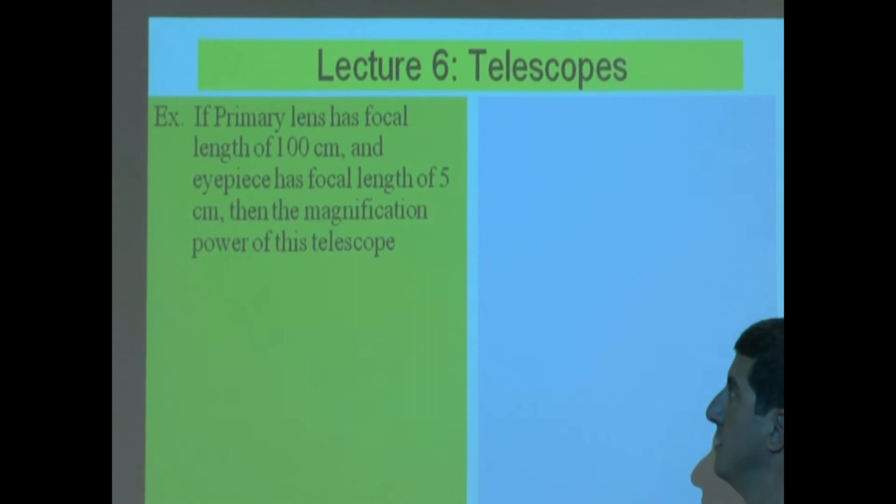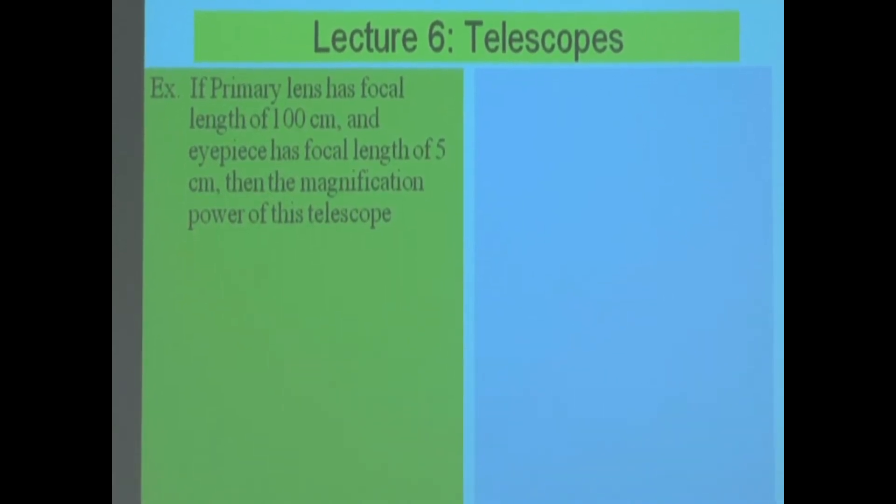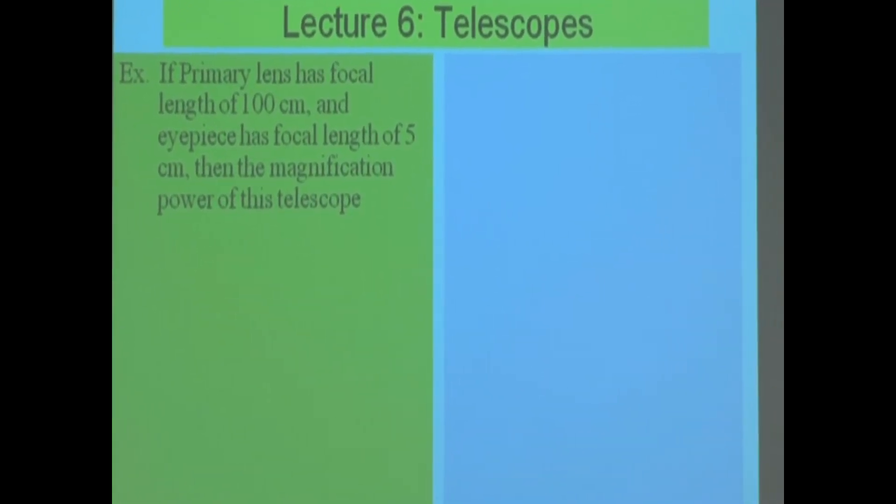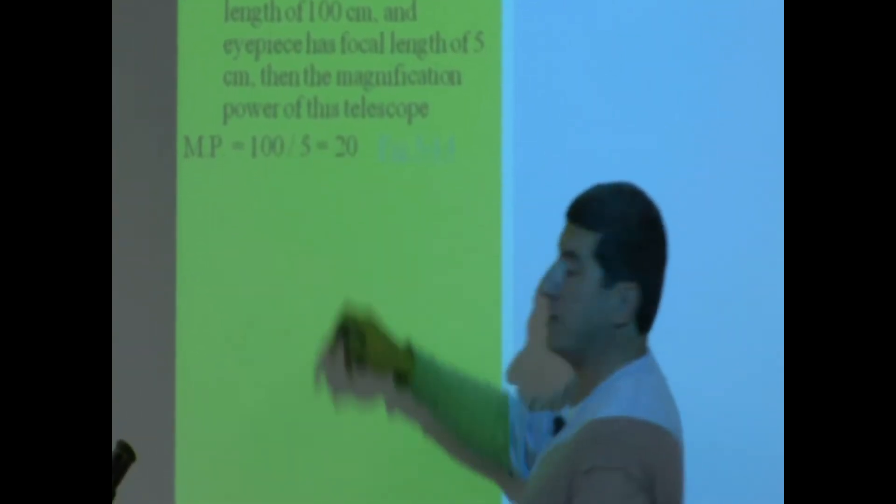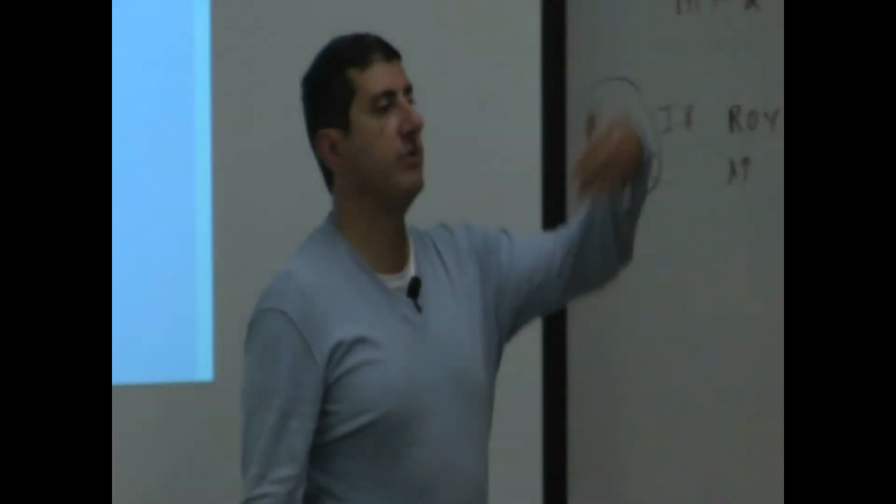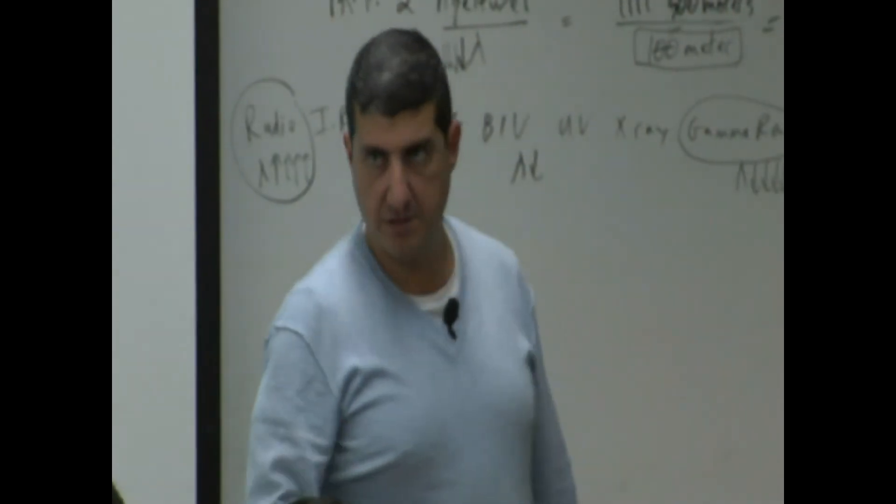Example, if the primary lens has a focal length of 100 centimeters, and the eyepiece has a focal length of 5 centimeters, then the magnification power of this lens is simply just divide them. 100 over 5, 20. That means it can magnify the image 20 times, 20-fold.